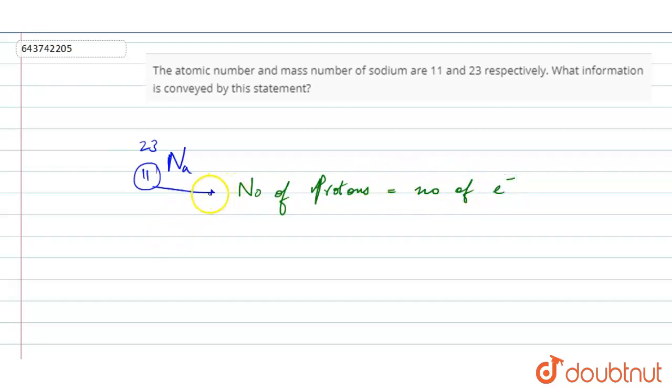Hence, the atomic number conveys number of protons and number of electrons. And this conveys atomic mass, which is number of protons plus number of neutrons.